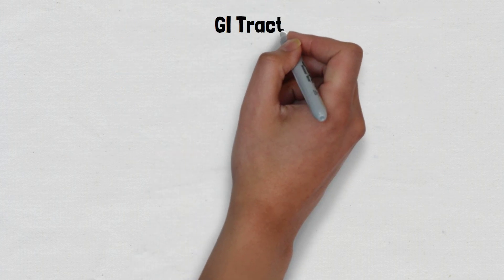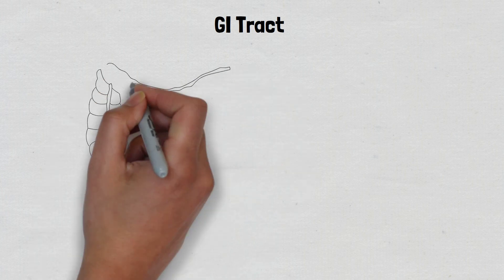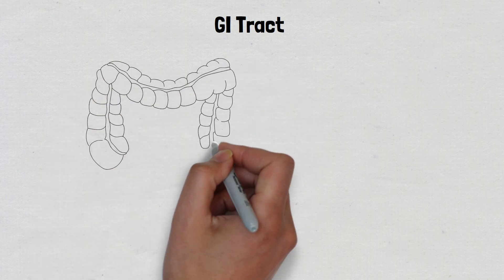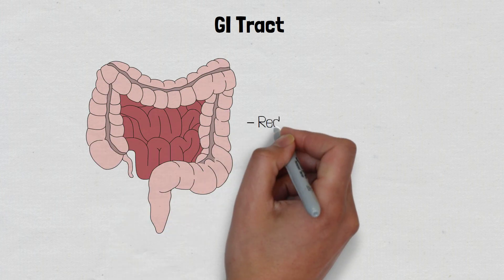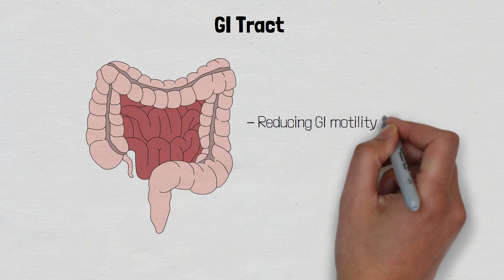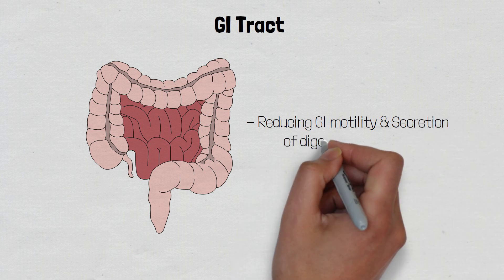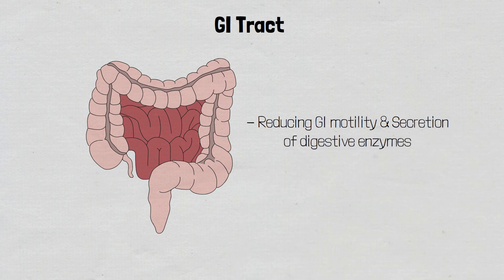And finally, the GI tract — reducing GI motility and the secretion of gastric enzymes. Although there are beta-2 receptors present in these different tissues, often several adrenergic receptors co-exist, and there is usually one type of adrenergic receptor that dominates and is responsible for the tissue's adrenergic response.